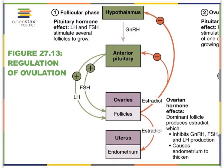On day one, or at the start of the cycle, the hypothalamus is going to increase its levels of gonadotropin, and this is going to trigger our anterior pituitary to secrete follicle-stimulating hormone and luteinizing hormone — both hormones that will stimulate the ovaries to mature some of its follicles.